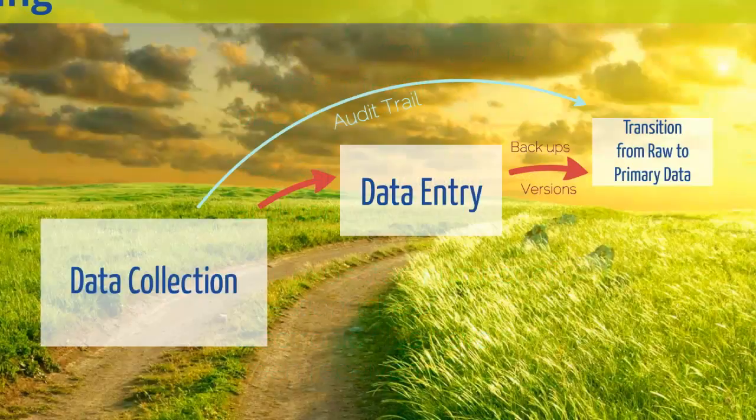You should start keeping an audit trail as soon as you formally start checking your data. This can be in the form of a document containing details of the checks that took place in the field and in the data entry. Once the data has been entered, it should include details of any corrections or changes to the data and how any outliers were dealt with. This document should be updated until the final primary data set or data sets have been finalised.